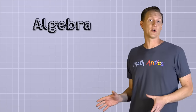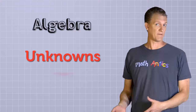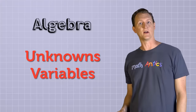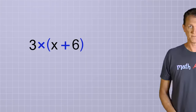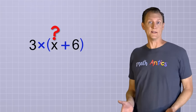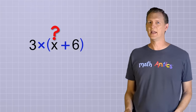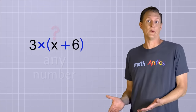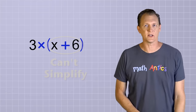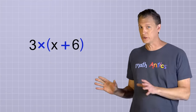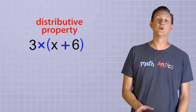But in algebra, things are a little more complicated because we aren't just working with known numbers. Algebra involves unknown values and variables. So in algebra, you might have an expression like this: 3 times the group x plus 6. In this expression, we don't know what value x is. It could be 4, like in the last expression, but it doesn't have to be — it could be any number at all. And since we don't know what it is, that means we can't simplify the group first. Our only option is to either leave the expression just like it is, or to use the distributive property to eliminate the group.